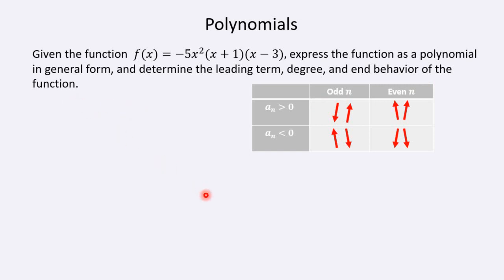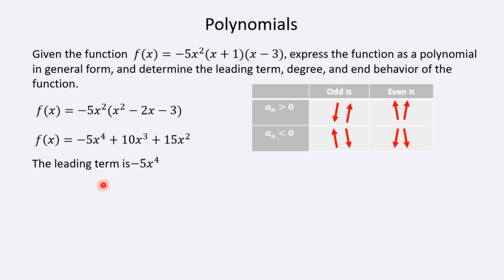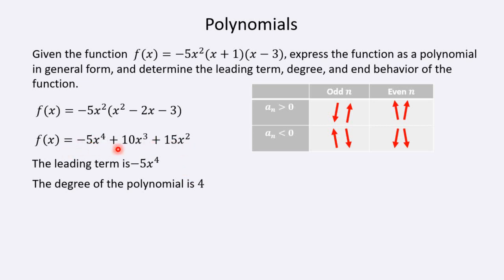Let's go ahead and do that. First, put it in general form by multiplying it all out. First I'll FOIL the two binomials, which gives a trinomial. Then I'll distribute the negative 5x squared to each term in the trinomial. That gives the general form — the first thing they asked for. Now I can determine the leading term. Of the exponents 2, 3, and 4, the largest is 4, so that's the degree of this polynomial. The leading term is the term with degree 4, and therefore the degree of the entire polynomial is 4.